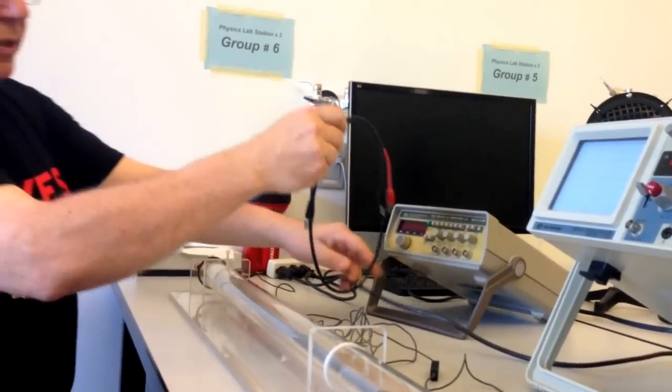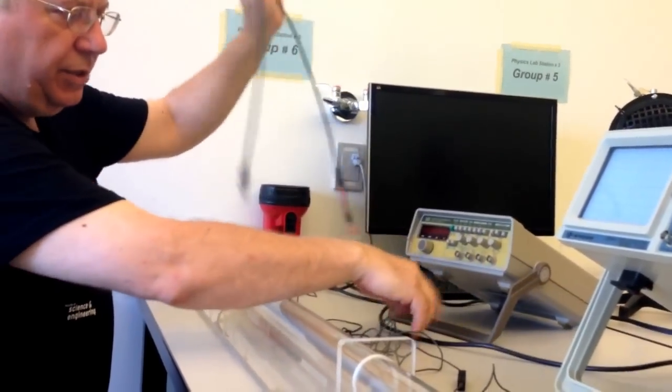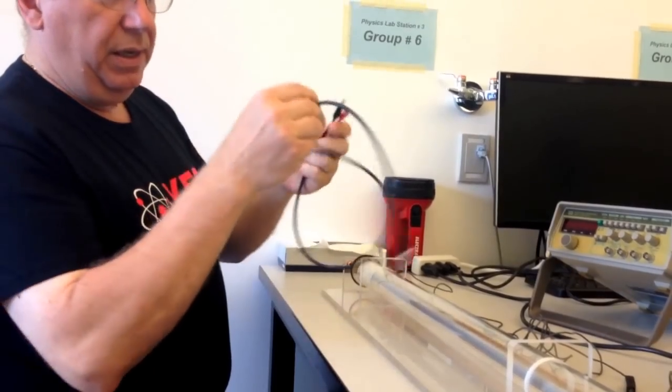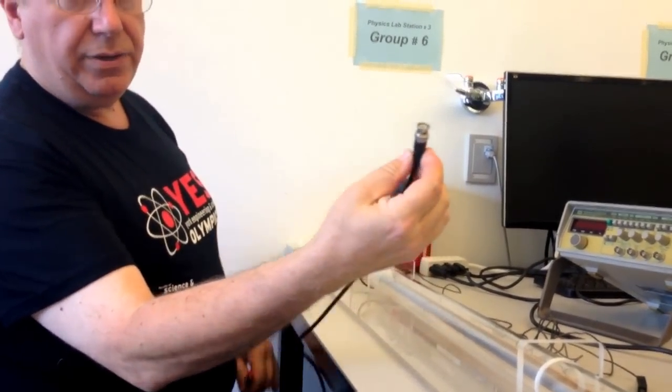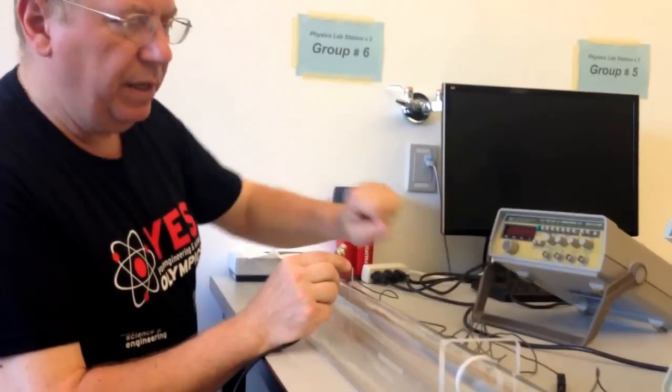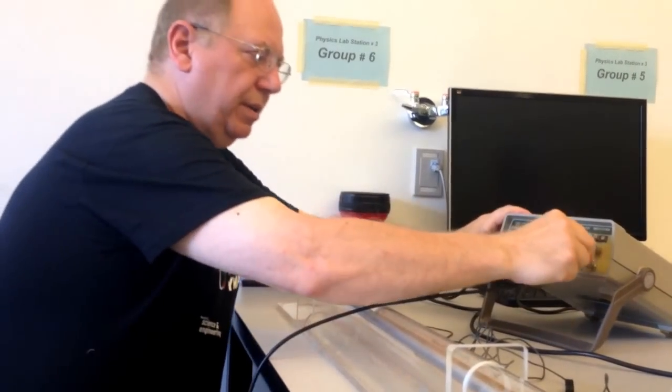There's a coaxial cable next to the signal generator or function generator. It has a BNC connector at one end, which you will attach to the output of the signal generator like this.